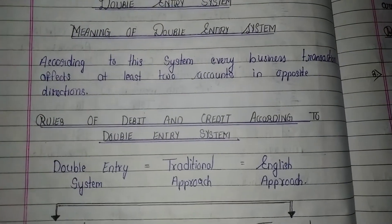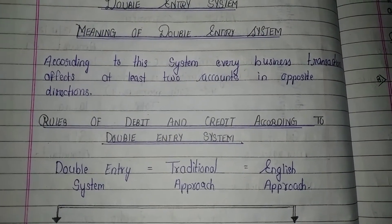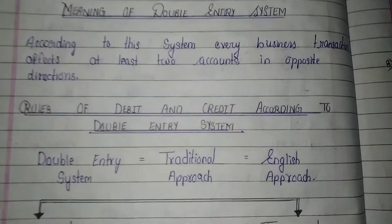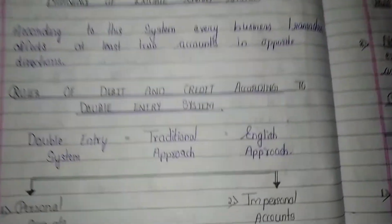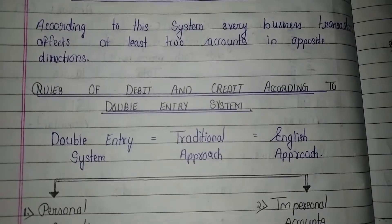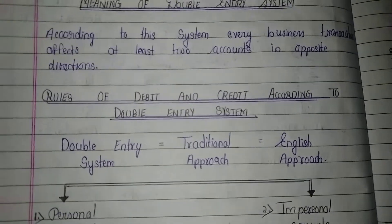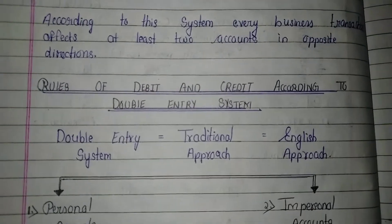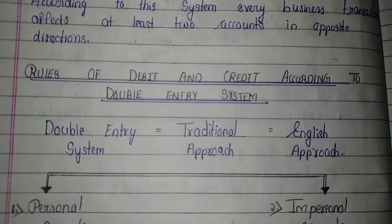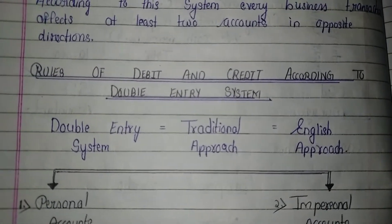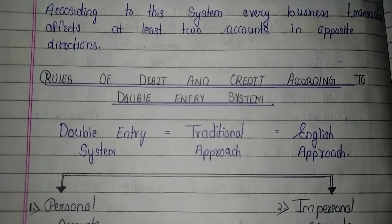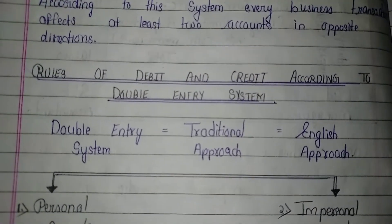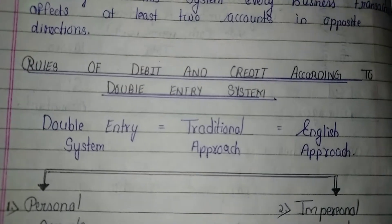Now let's see the rules of debit and credit according to the double entry system, which we have already studied. Double entry system is also known as the traditional approach, and it is also known as the English approach.